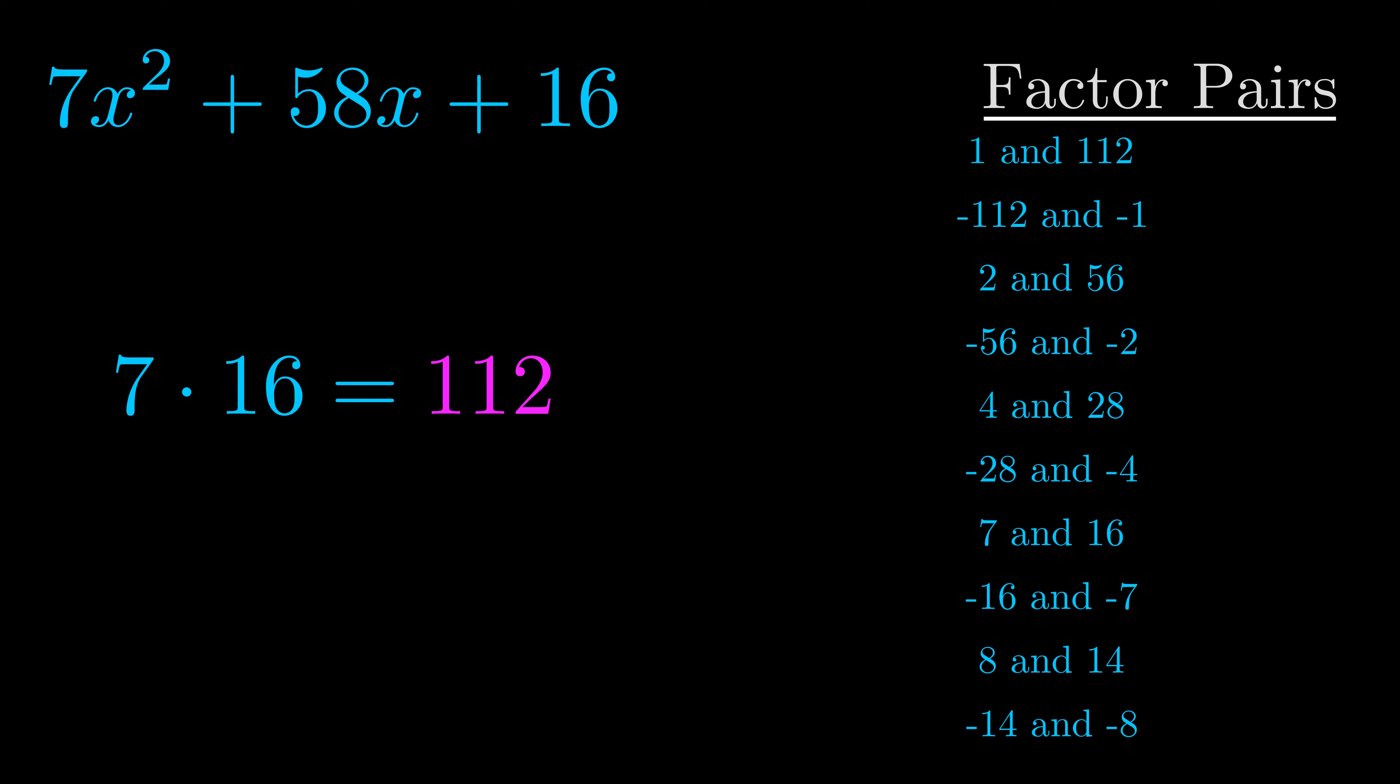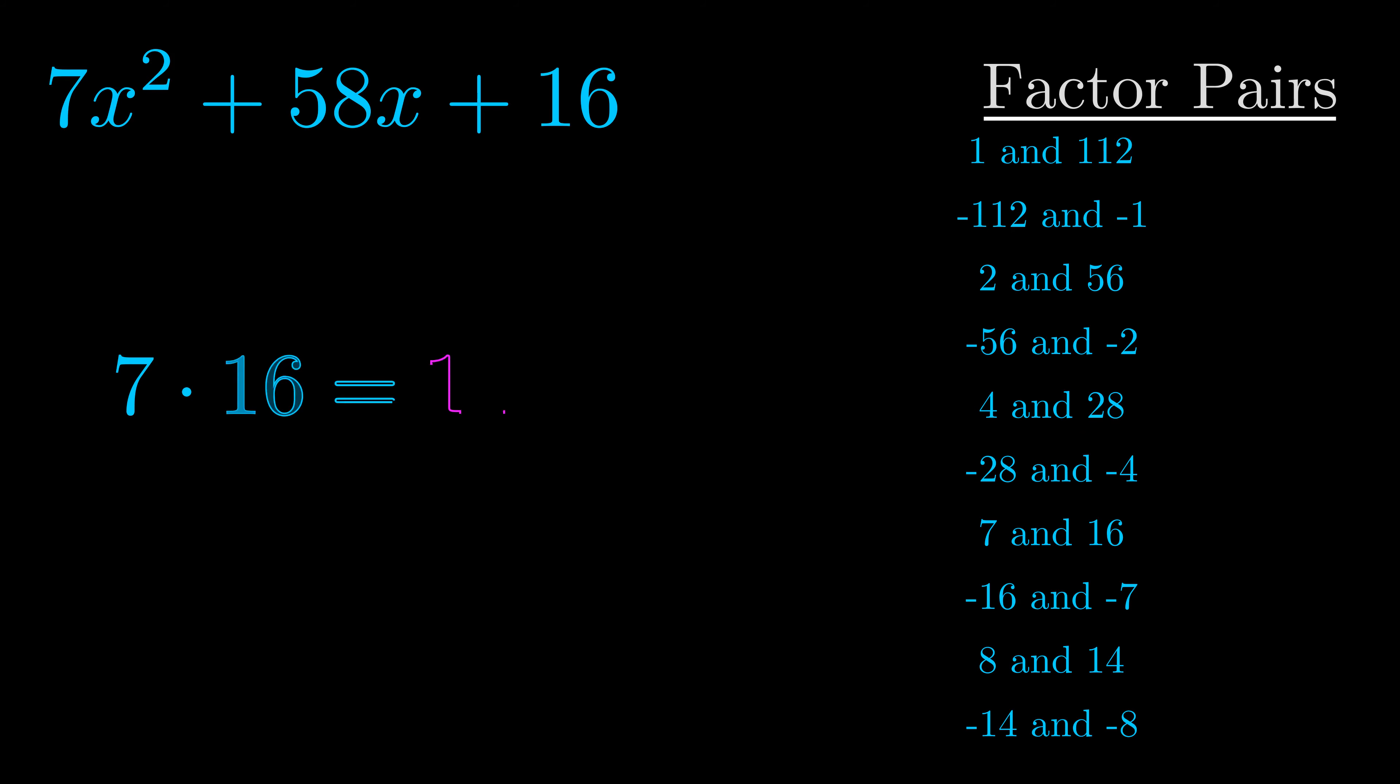Now once you have these factor pairs the goal is to find which of these pairs adds to the b value. The b value is the coefficient on the x term. That's the middle term, the one that we haven't done anything with yet. And really this is the only factor pair that we need.